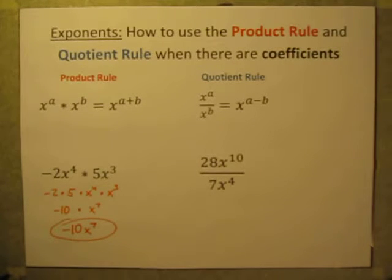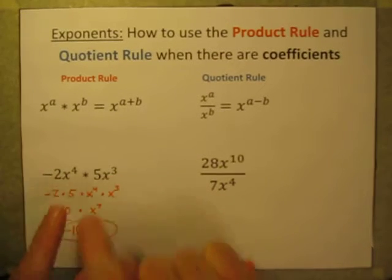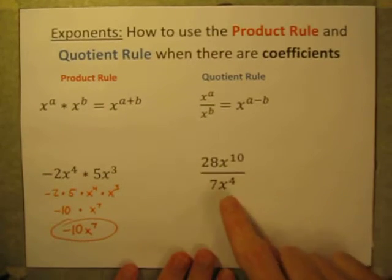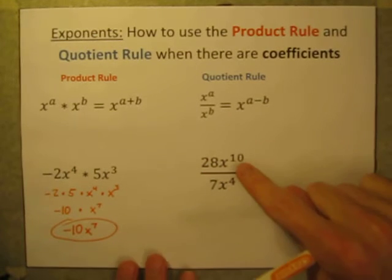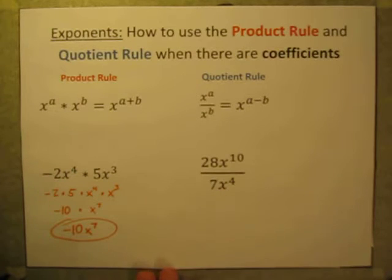So when you have those coefficients, you can just multiply those coefficients together, then use the product rule on the variables. If we come over here, 28x to the 10th power divided by 7x to the 4th power. On this one, let's do the same thing.